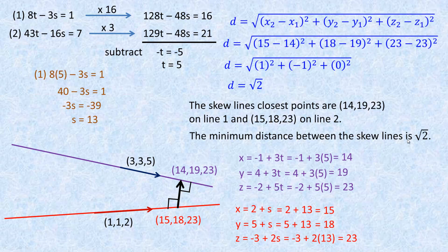That's one method. There actually is a formula for this using projections — if you take two random points, one on each line, and project the connecting vector onto the cross product of the direction vectors, you can find the distance directly. However, that formula doesn't find the actual two closest points, whereas this strategy does. That's the end of the tutorial.